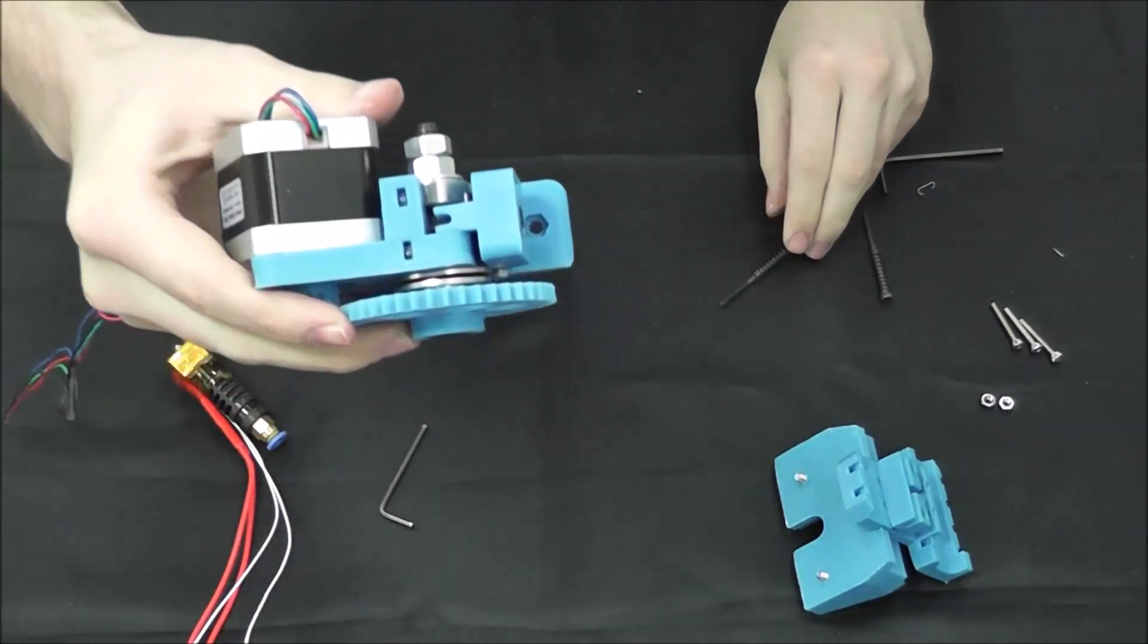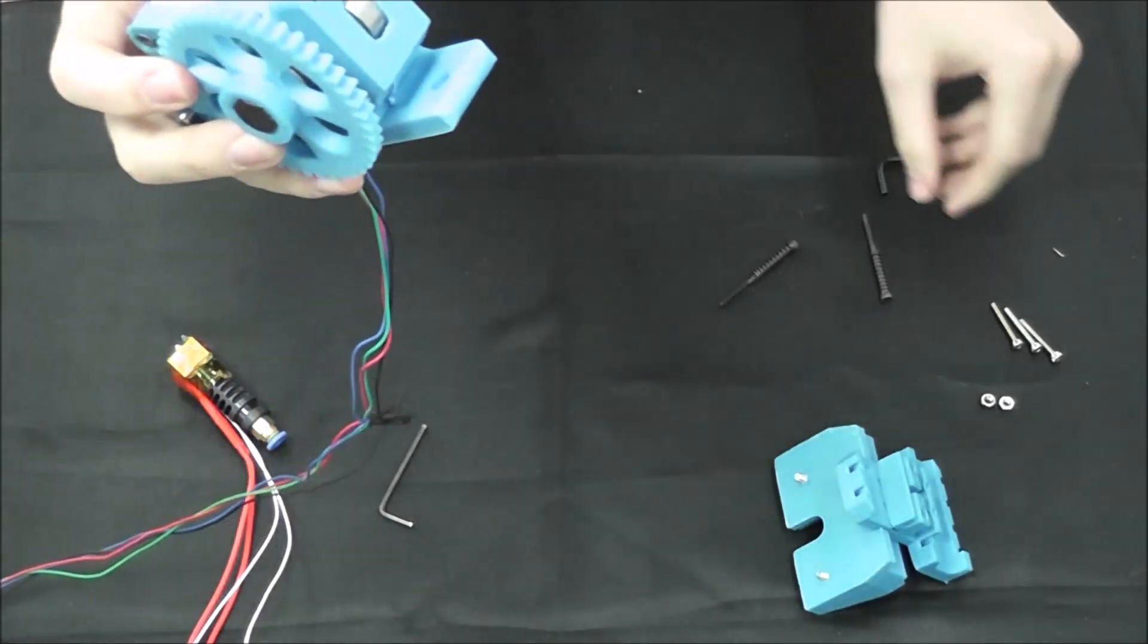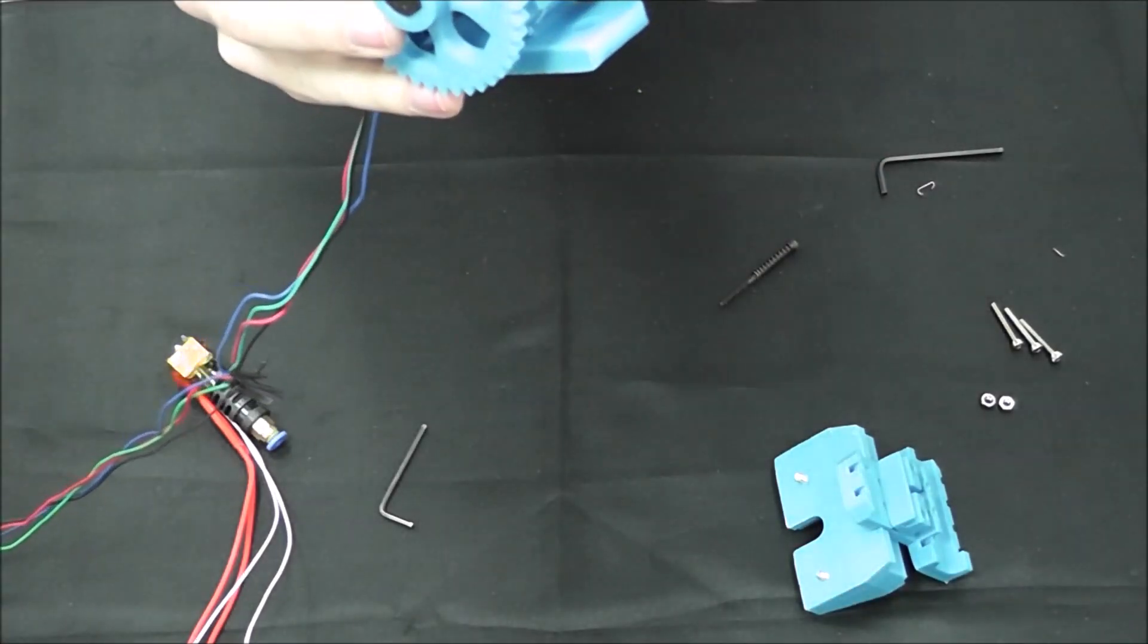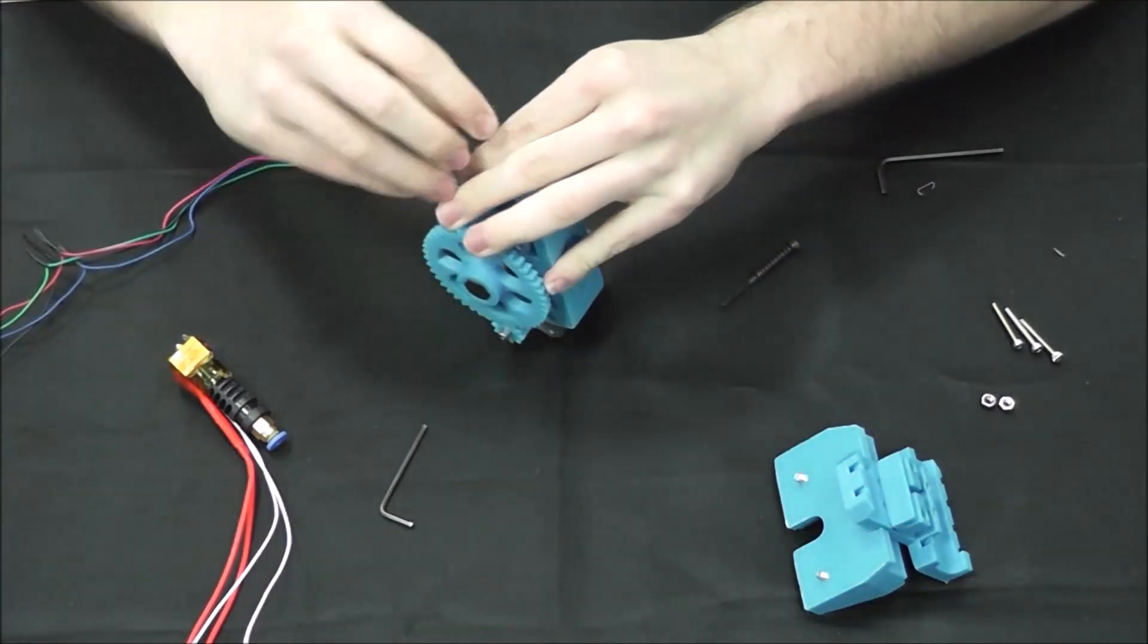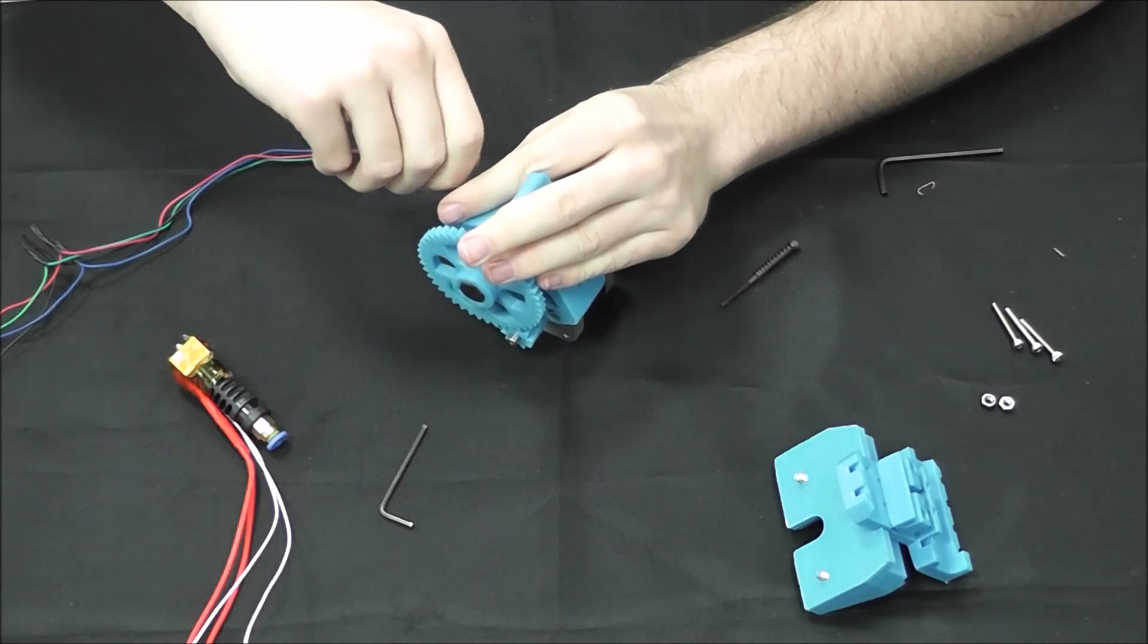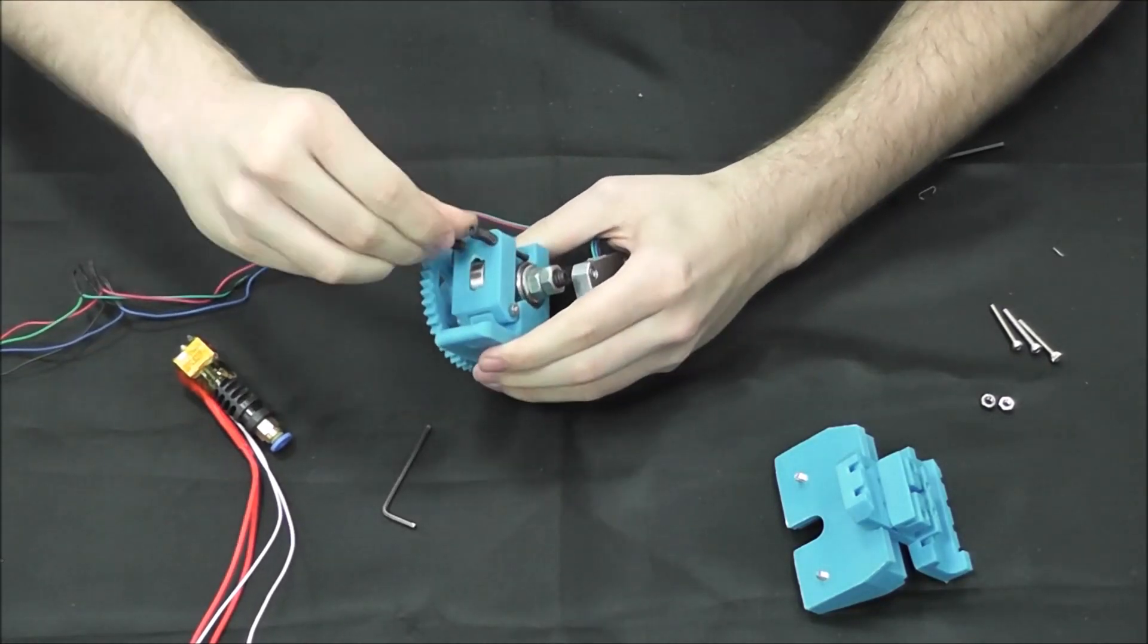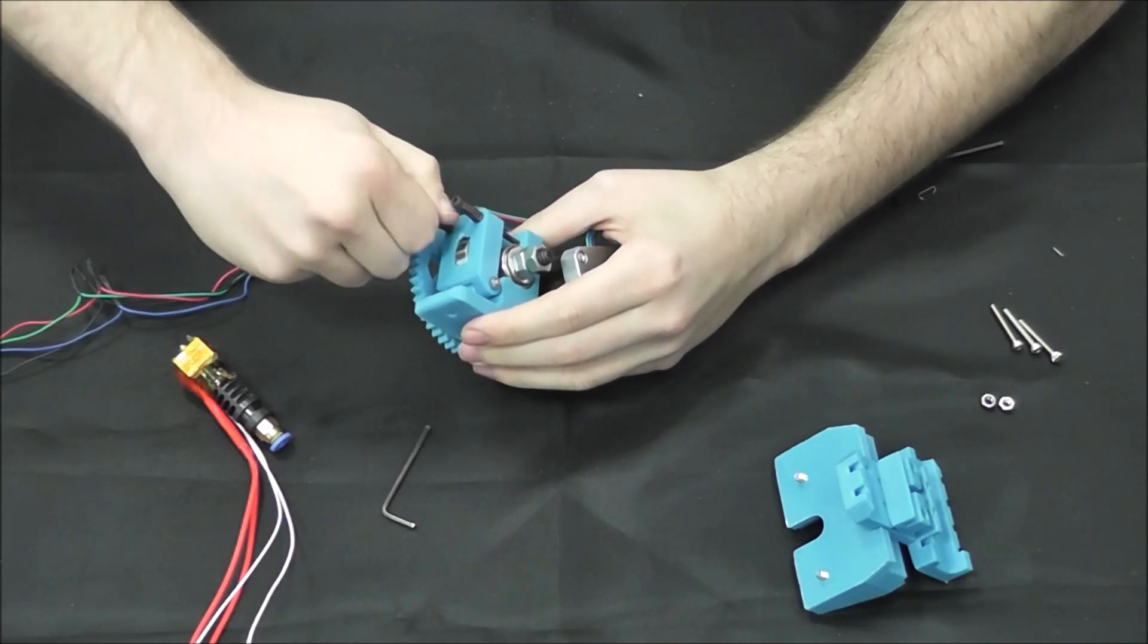And you'll see on the top of the extruder there are two small slots which will need M3 nuts slid in them so that when you insert the 50 millimeter screw through, it slides all the way back into there and can catch. Now the springs are going to make it a little bit hard to lock them in, but once they thread they should stick in fine. Okay, there's one. And there's the other.